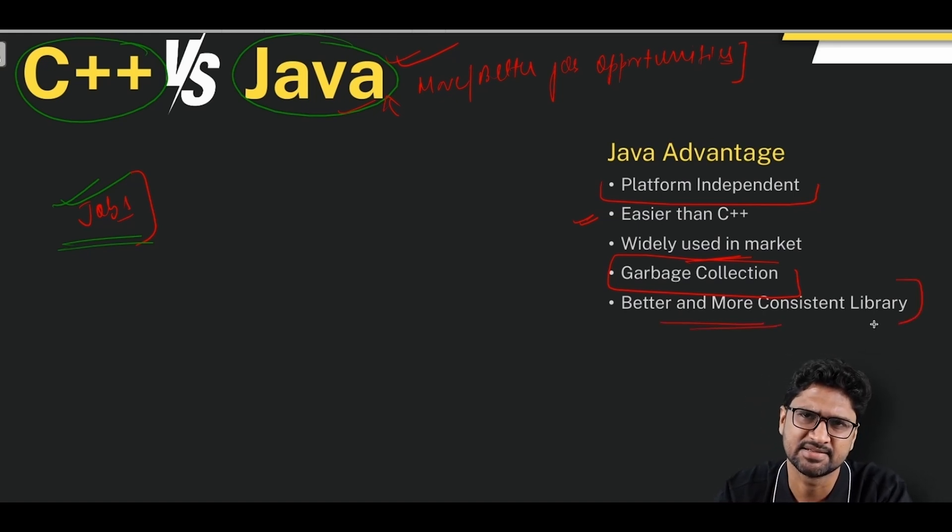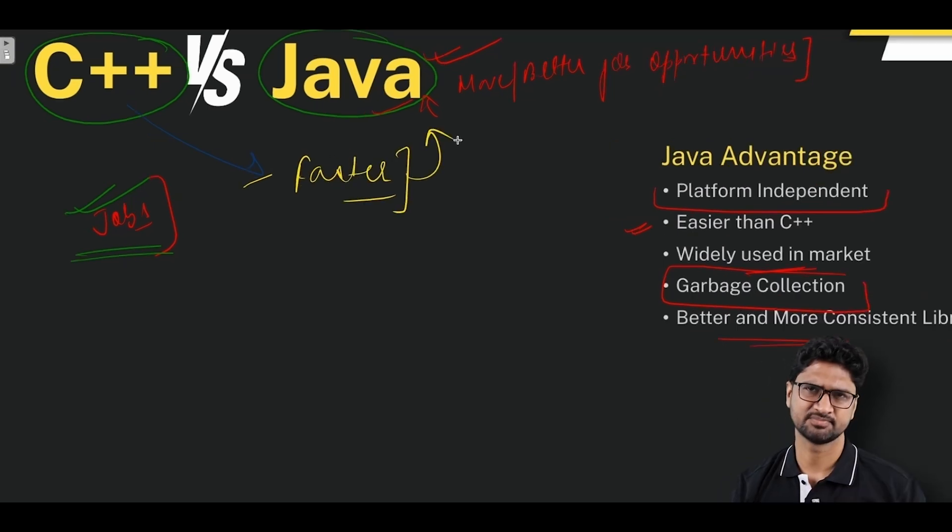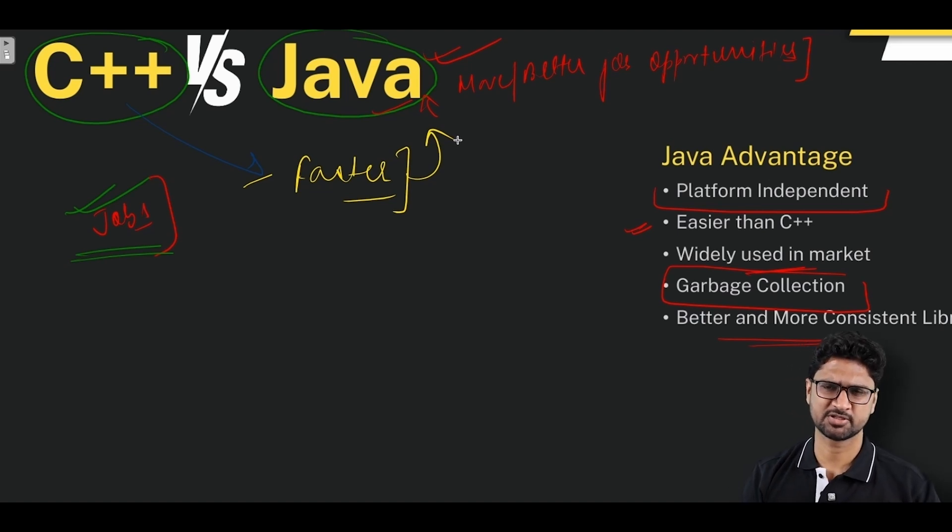Garbage collection helps you automatically manage memories in the system. Last but not least, all thanks to the evolving community of Java, Java has better and more consistent libraries. Now we have understood C++ and Java, but supporters of C++ say that C++ is much faster. Is it true? Yes, to some extent it is, but Java is closely coping up with C++.